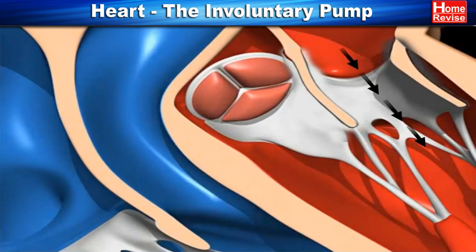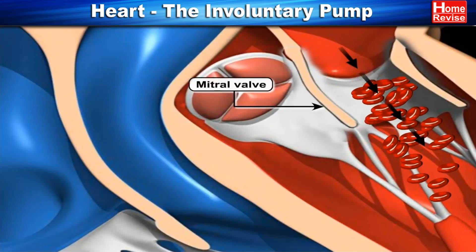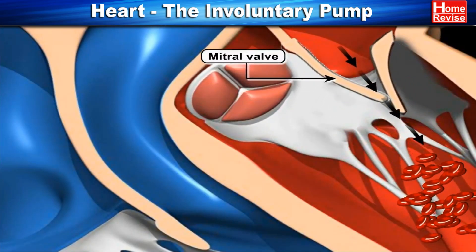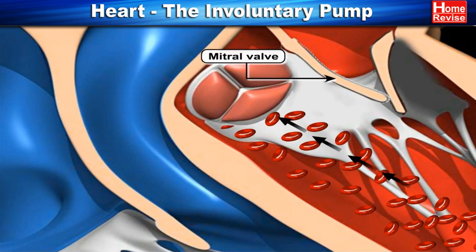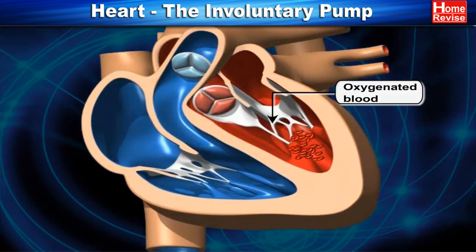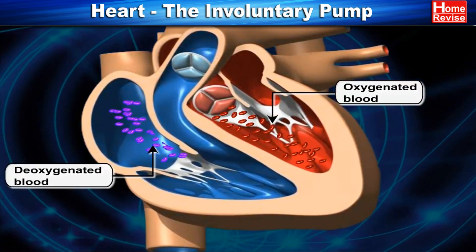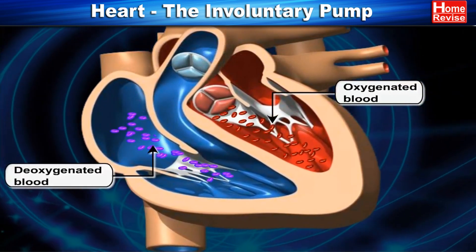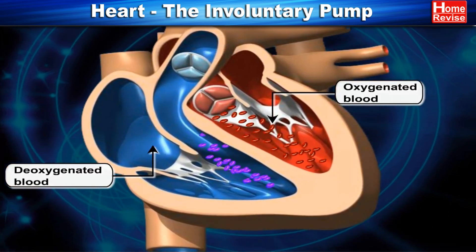The valves between the atria and ventricles ensure that blood does not flow backwards. The left half carries oxygenated blood while the right half carries deoxygenated blood.